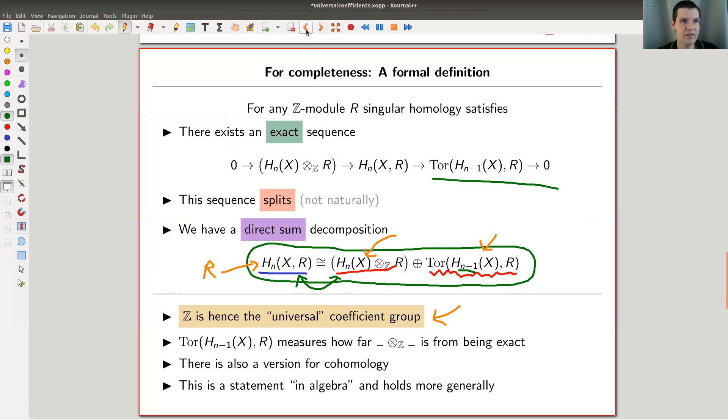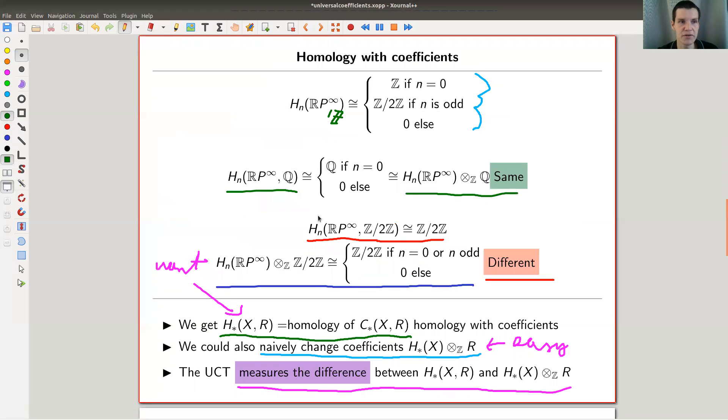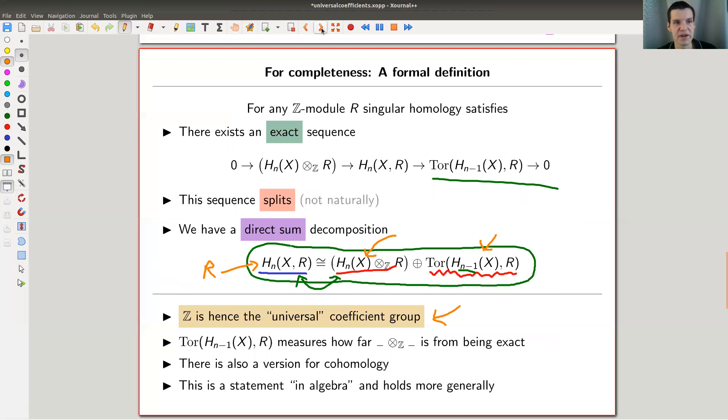So the one you want is always a bit bigger than the one you get. And you can actually see this in those examples. In this example it's the same - I will explain that in a second why this is. And here the one you want is always a little bit bigger because it also has Z mod 2 in the else case, not just in the odd case. So it's always a little bit bigger.